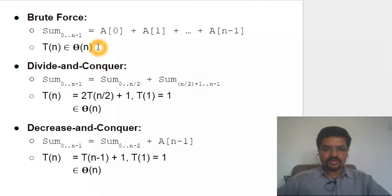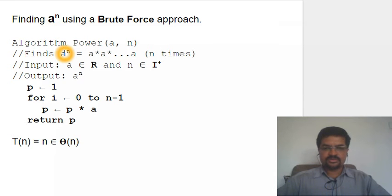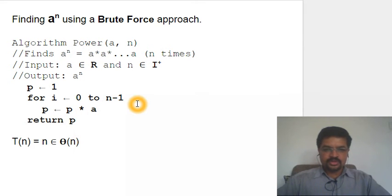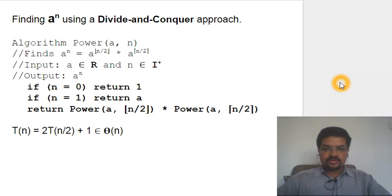We've solved the sum problem by three different methods, all with the same time efficiency class. Now let's solve another problem: finding a^n. The brute force approach — a^n by definition is multiplying a by itself n times, done in a loop. Start with the product as 1 and multiply a, n times. Obviously we are multiplying n times, so the time efficiency is O(n).